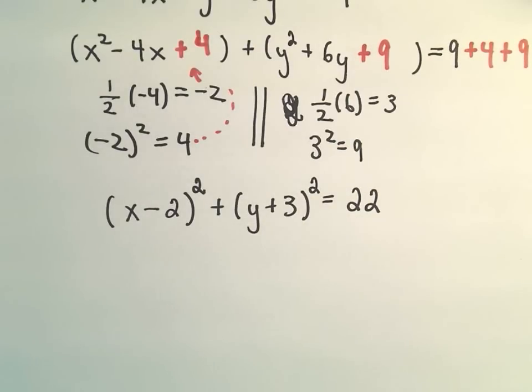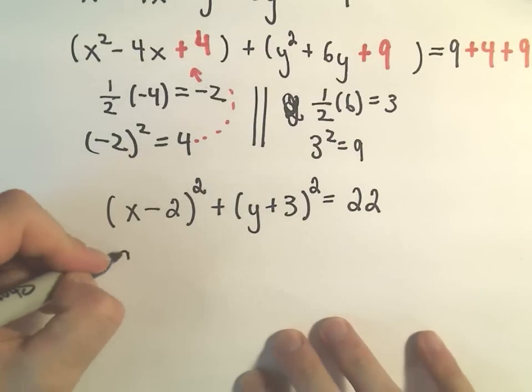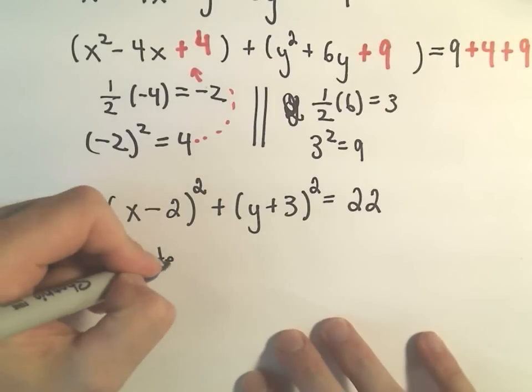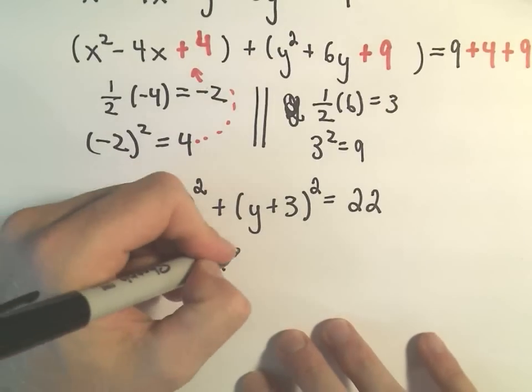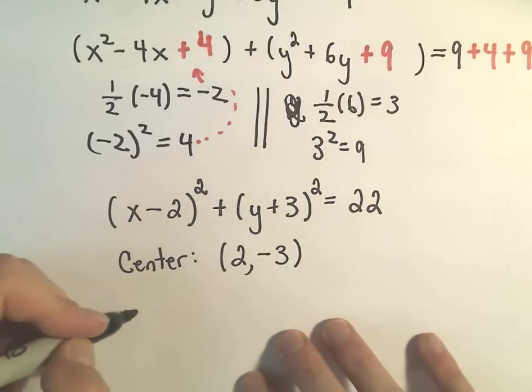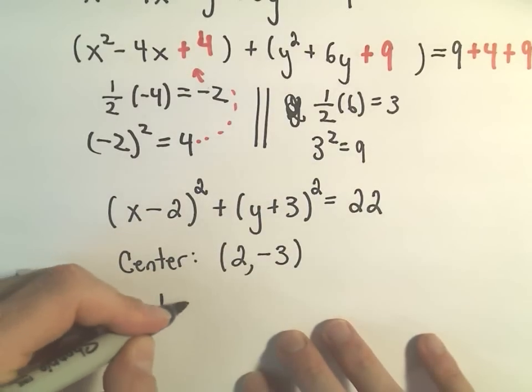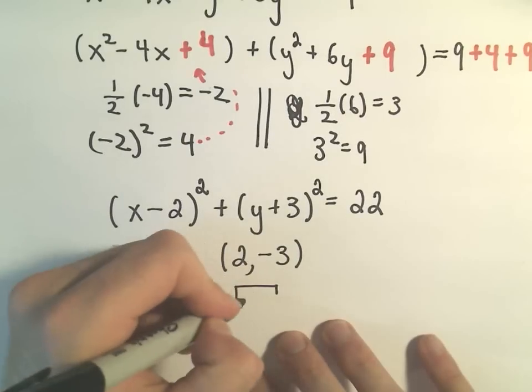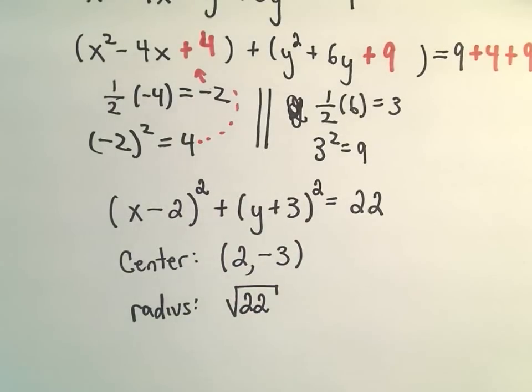And now we've put this in our familiar center radius form. It says the center of our circle is going to be at the x-coordinate of positive 2 and the y-coordinate of negative 3. And then the radius of our circle is simply going to be the square root of 22, which factors as 2 times 11. That doesn't really break down any further.